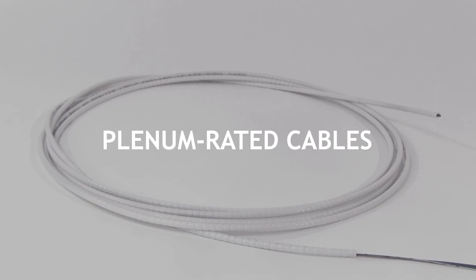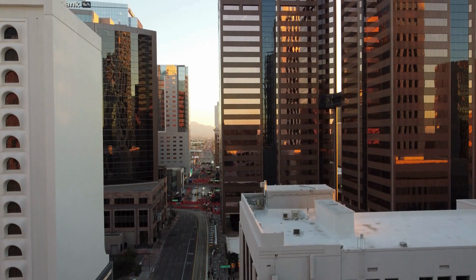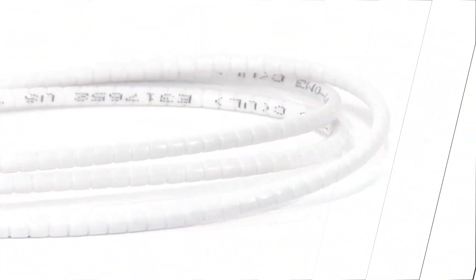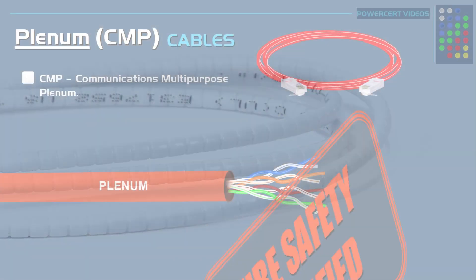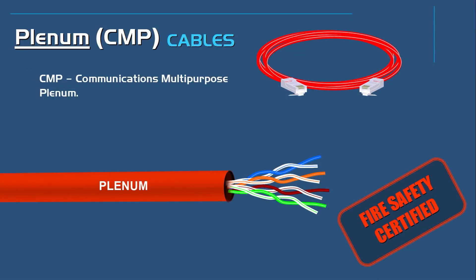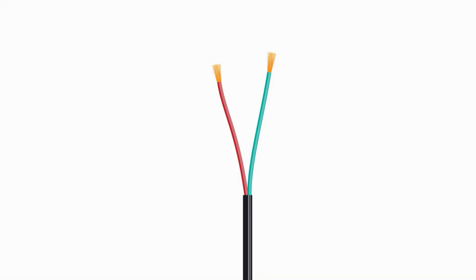Plenum rated cables: for cables installed in building plenum spaces — areas used for air circulation — additional fire-retardant properties are required. Plenum rated cables have a special jacket material that is flame-resistant and produces less smoke and toxic fumes in the event of a fire. This makes them safer for use in commercial and residential buildings.